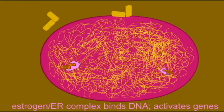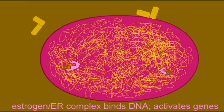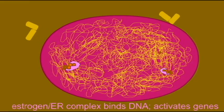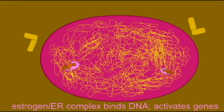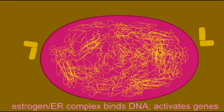Once inside the nucleus of the cell, the estrogen and estrogen receptor complex bind to the DNA and thus activate genes. Human genes are off until they are turned on.